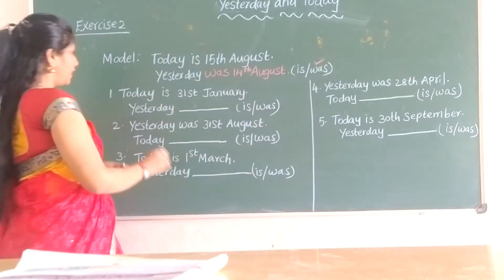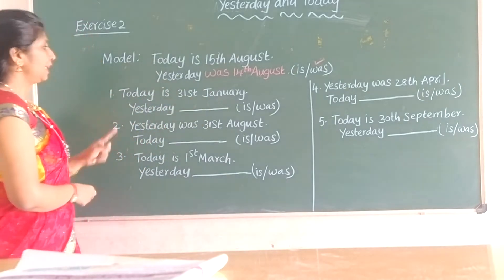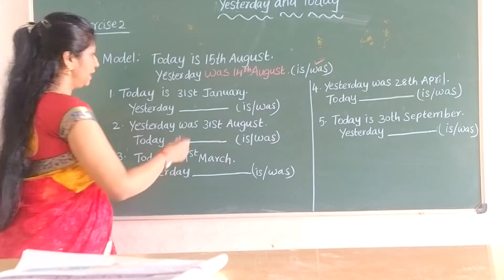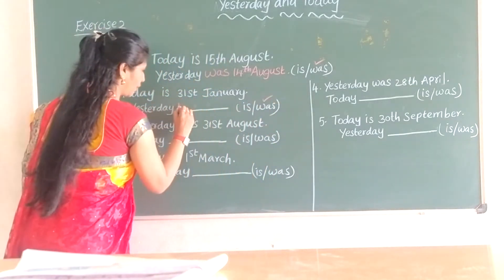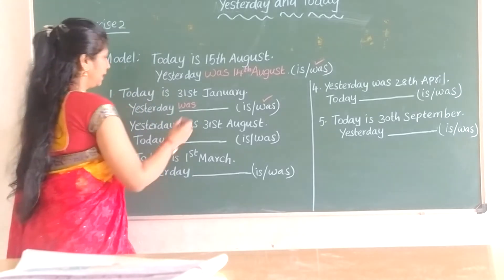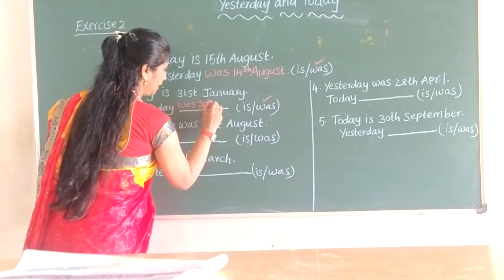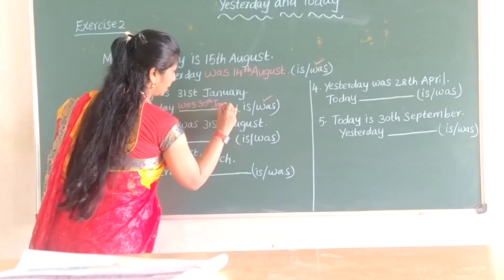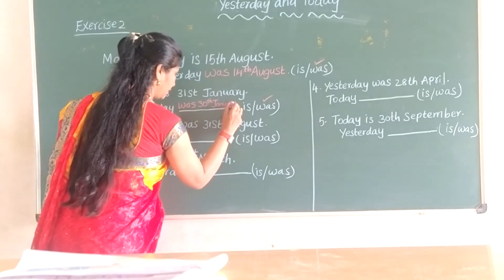First one: Today is 31st January. Yesterday — yesterday means 'was' — yesterday was 30th January. Understood?